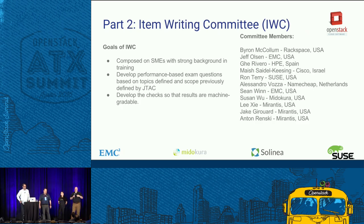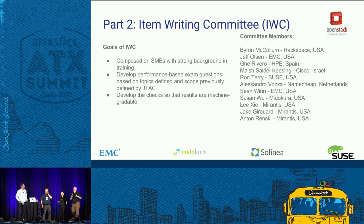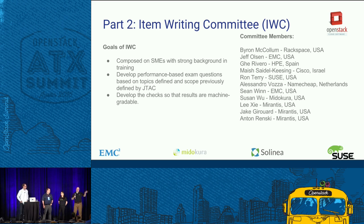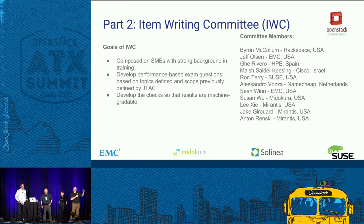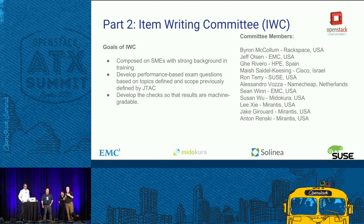Once the job task analysis or JTAC committee finished outlining the objectives the exam would cover, another committee was put together — the item writing committee — and it was our job. All of us participated on the item writing committee. It was our job to come up with the actual exam items or questions that you'll have to answer or fulfill as you take the examination. We took the objectives delivered by the JTAC and turned those into actual questions and scenarios that you need to perform.